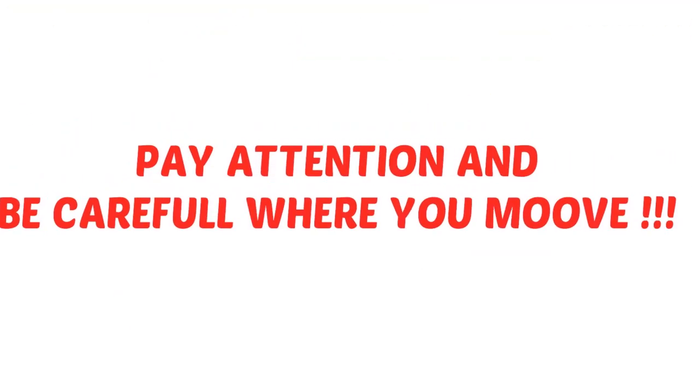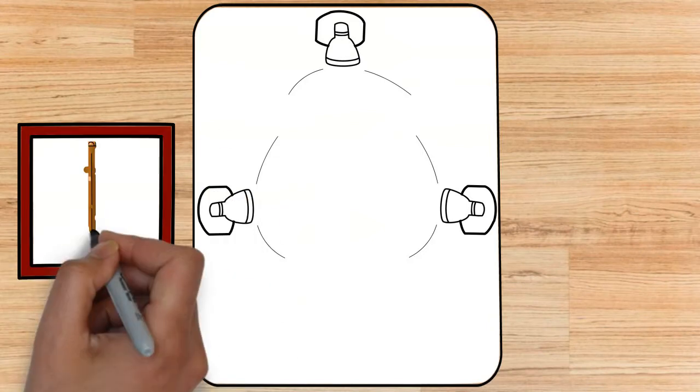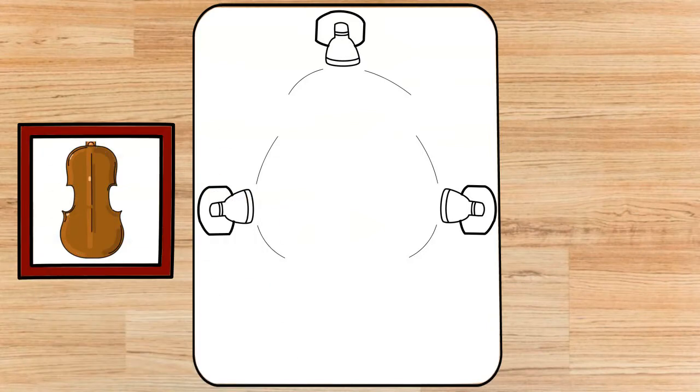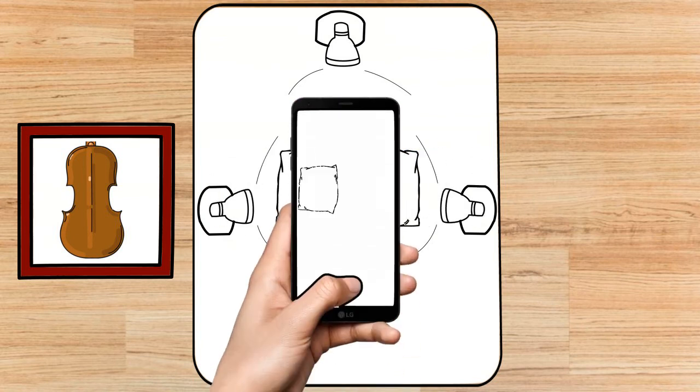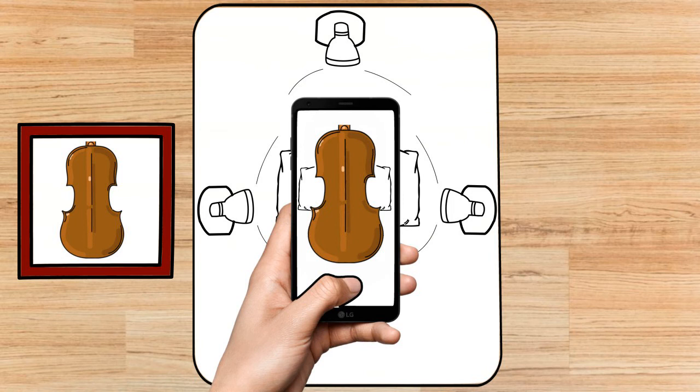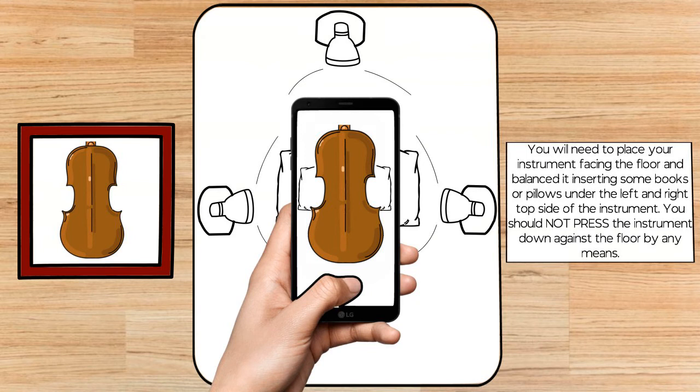For pictures of the back side of your instrument, violin, viola, or cello, you will need to place your instrument facing the floor and balance it by inserting some books or pillows under the left and right top side of the instrument. You should not press the instrument down against the floor by any means.